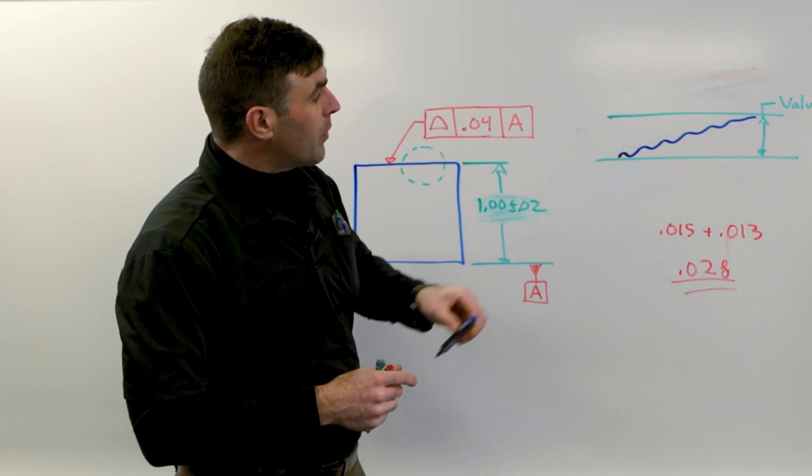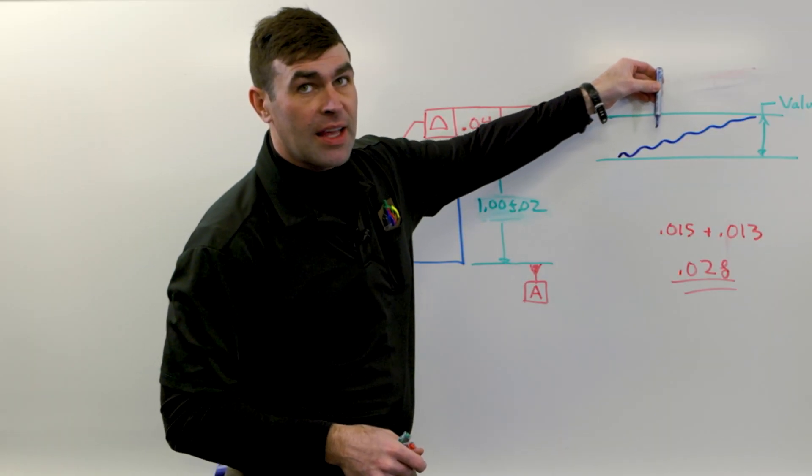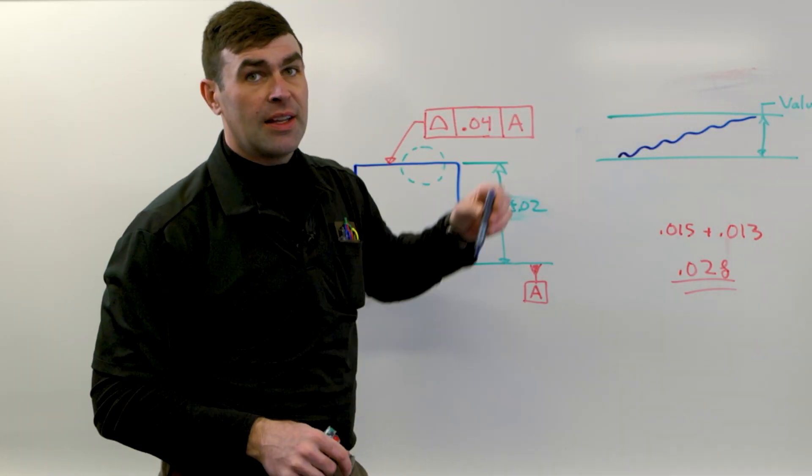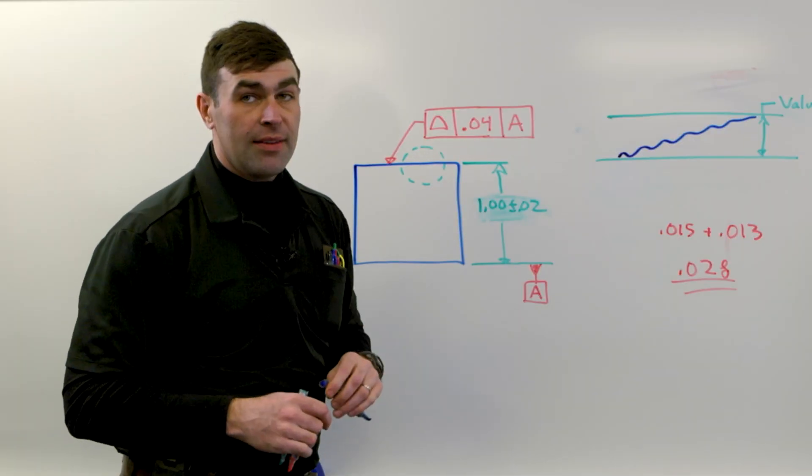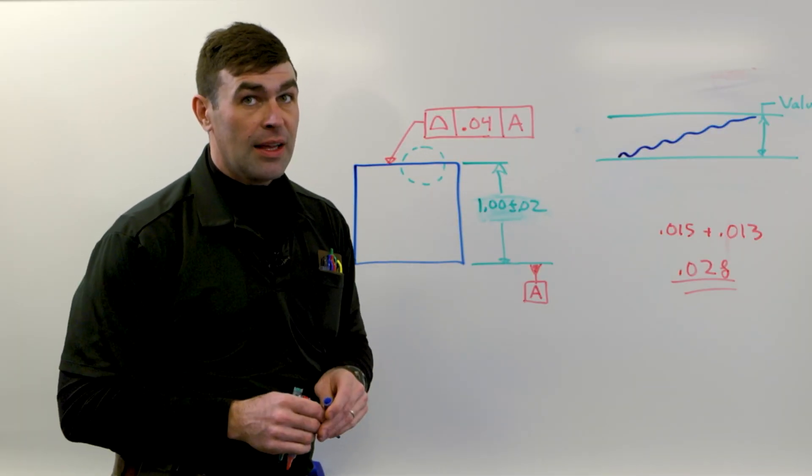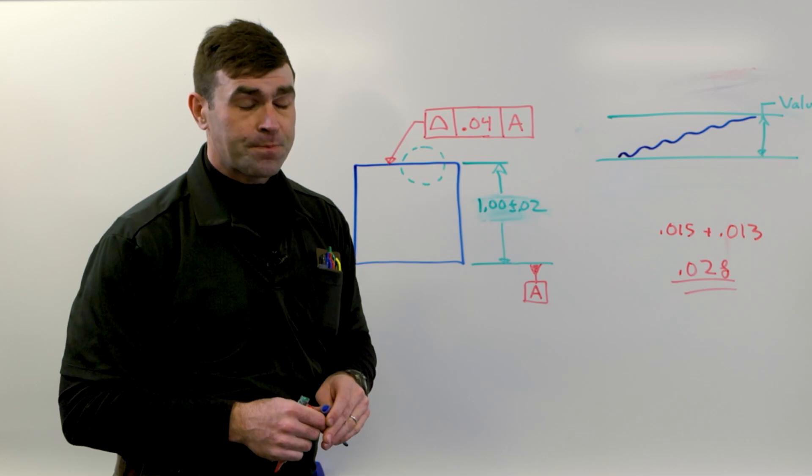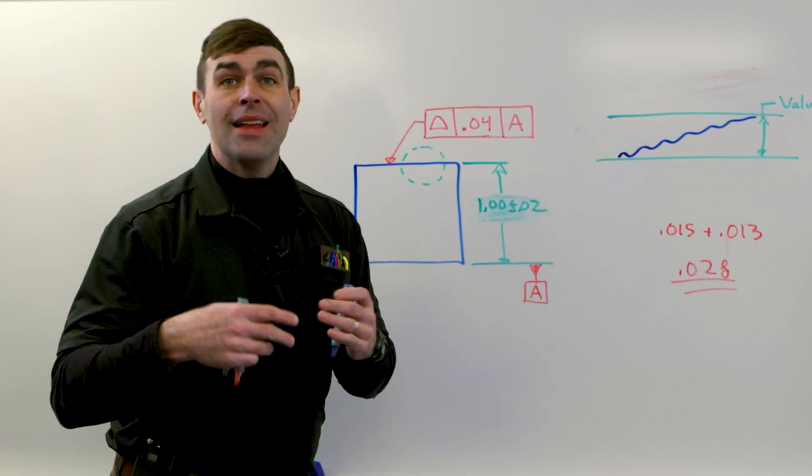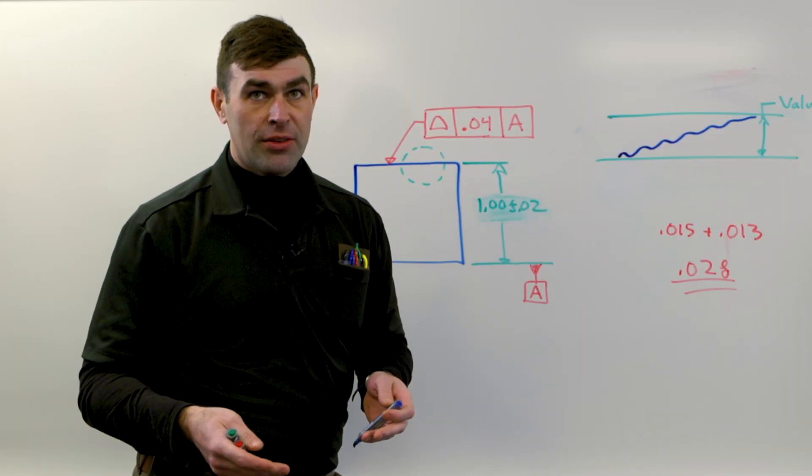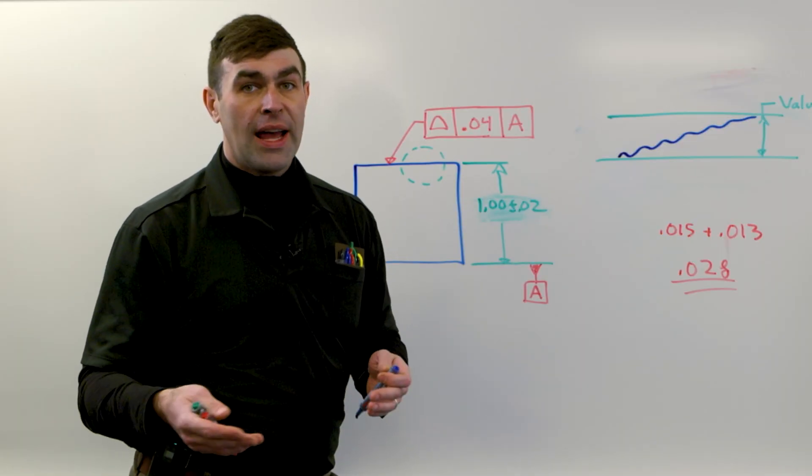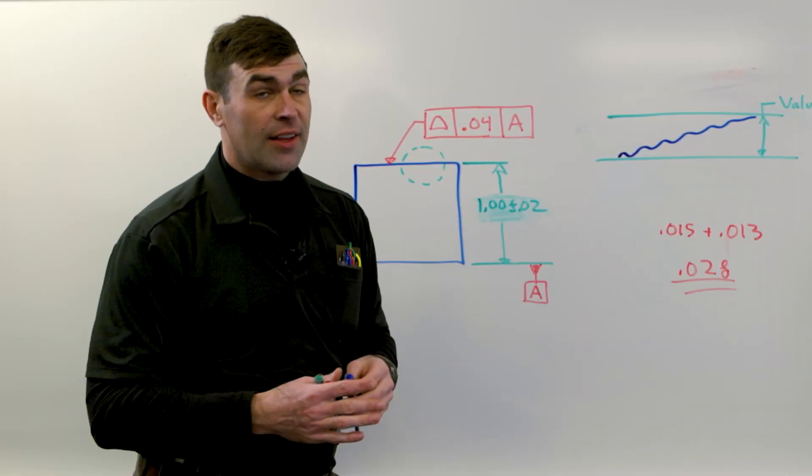You can do this on a surface plate by just running an indicator over it, and it's total indicator reading. Fairly simple. The difference between this and parallelism is basically nil on a flat surface. If it's a curved surface, that's a totally different thing. That is not easy to measure on a plus or minus dimension, right? That's just going to require more effort to verify that surface.